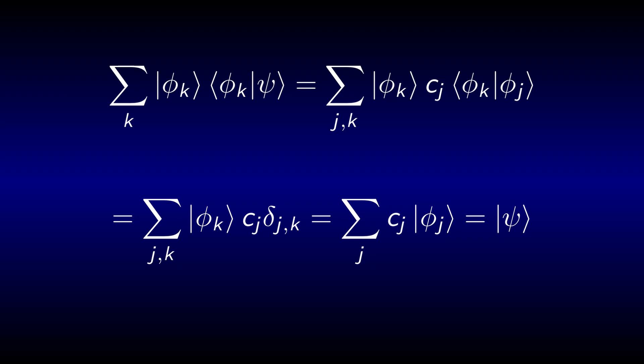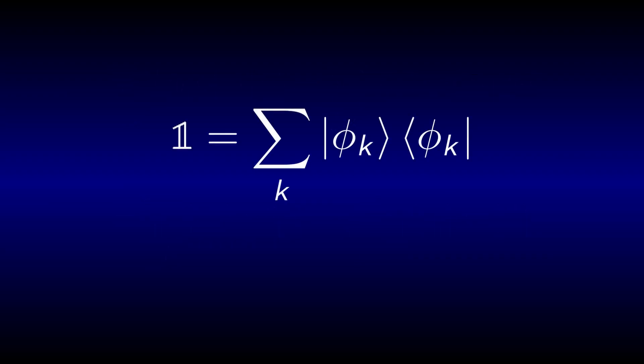The sum over the projectors of all states of an orthonormal basis set has no effect whatsoever, and yet it will prove extremely useful. Because this object does not affect any wave functions, we call it a unit operator, and the fact that it is one is called a completeness relation.